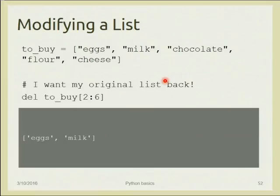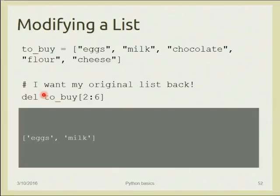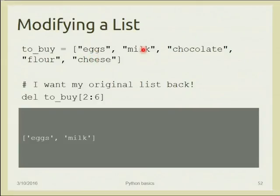To remove a range of elements, use the 'del' statement: 'del to_buy[2:6]' removes all elements from index two up to six, leaving only the first two elements — eggs and milk. You can notice that strings and lists are quite similar because a string is a sequence of characters.